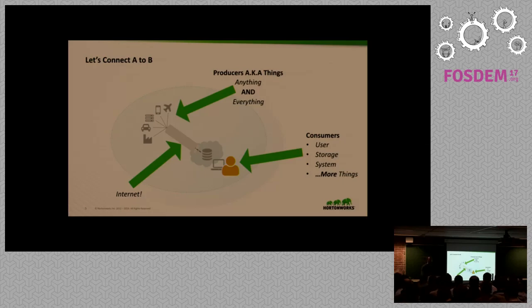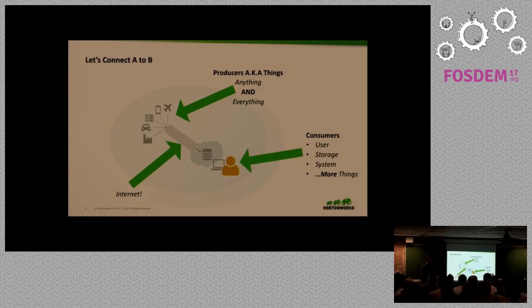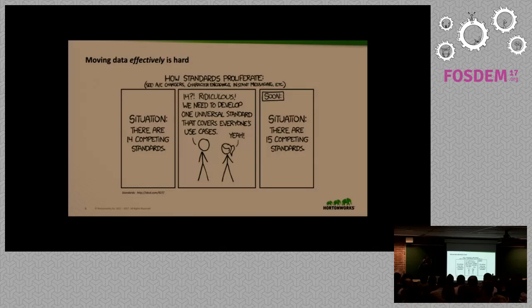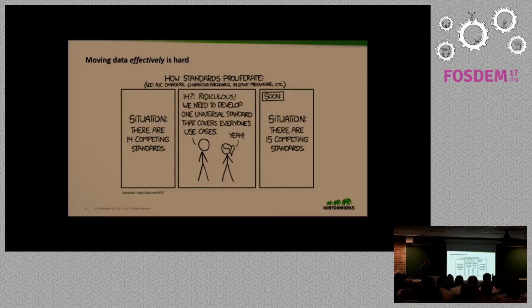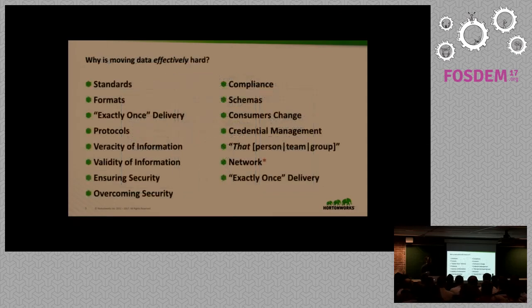We have producers — that could be computers, log files, devices, or user interaction — sending it usually over the internet, and then somebody or something needs to make sense of that data. But it's hard, and it's not the first time this problem has been tried to be solved. Many people have tried to do it in many different ways — the classic example of 14 to 15 competing standards.